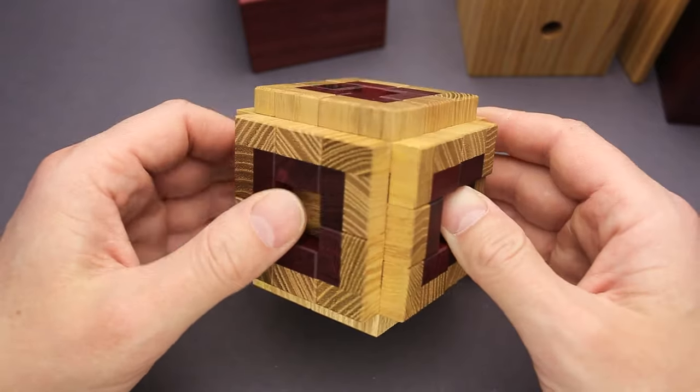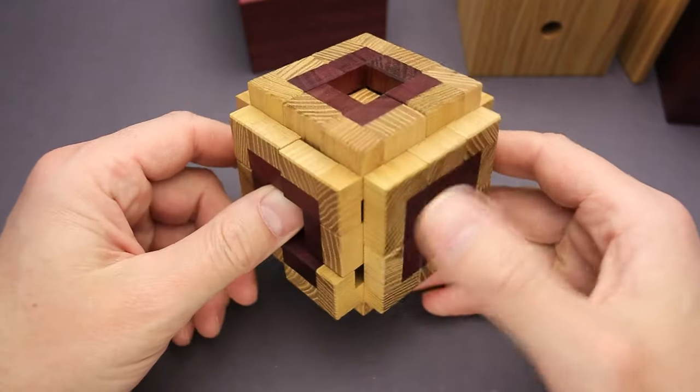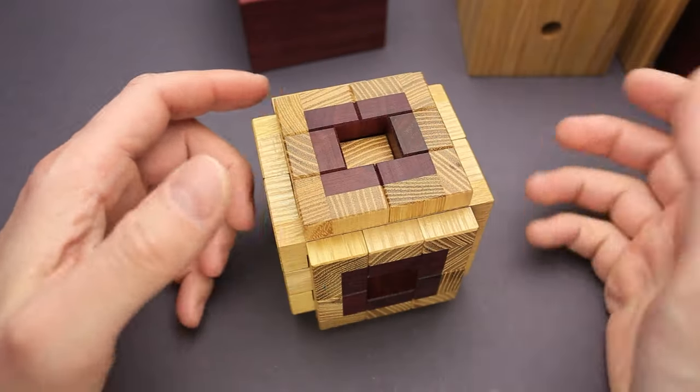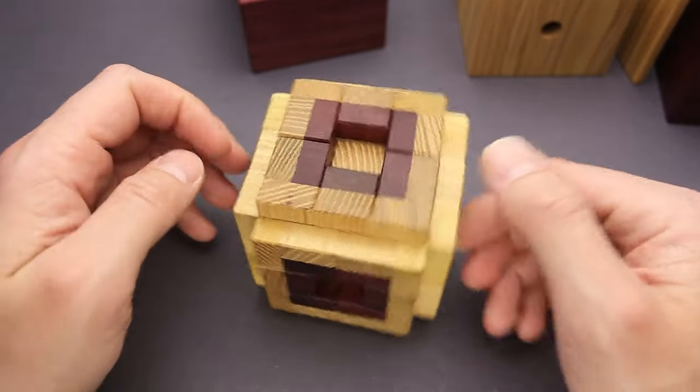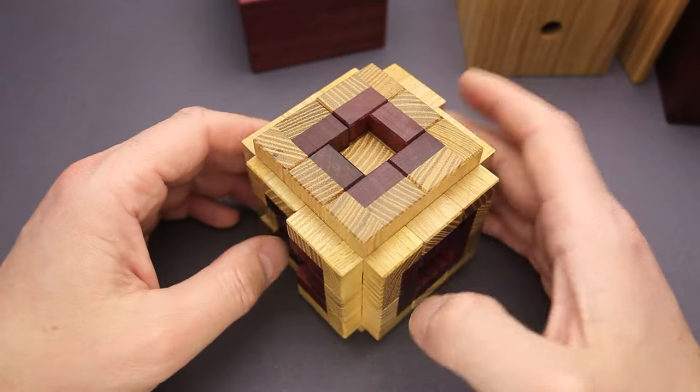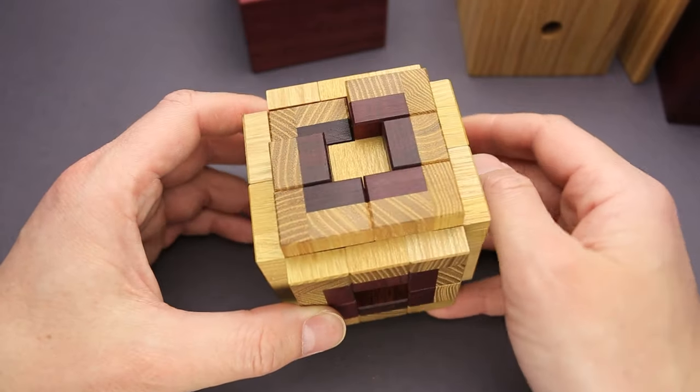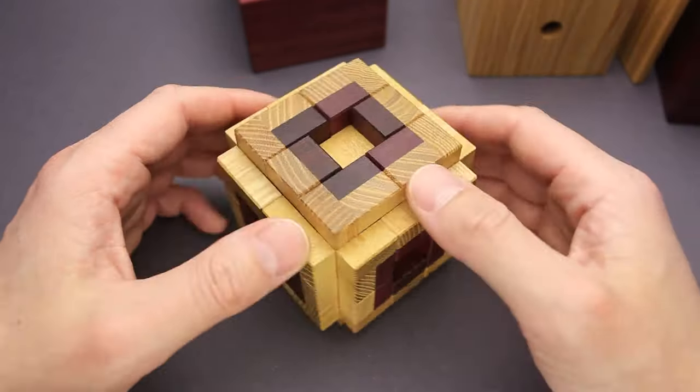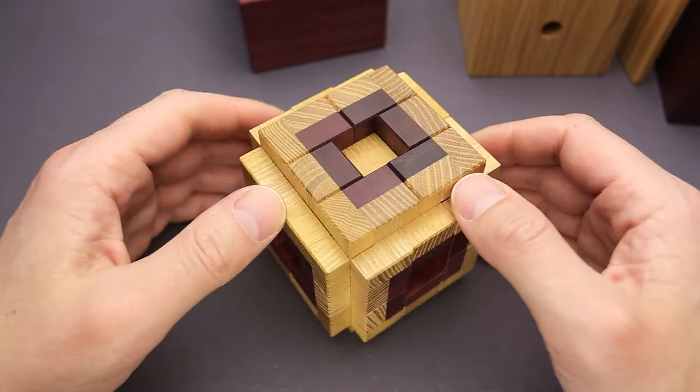The Ilium puzzle has 19 parts and it requires 47 steps to take it apart, and then 47 more steps to assemble it back together. It takes 19 steps to remove the first piece and only like two, one or three steps to remove the rest of the parts.